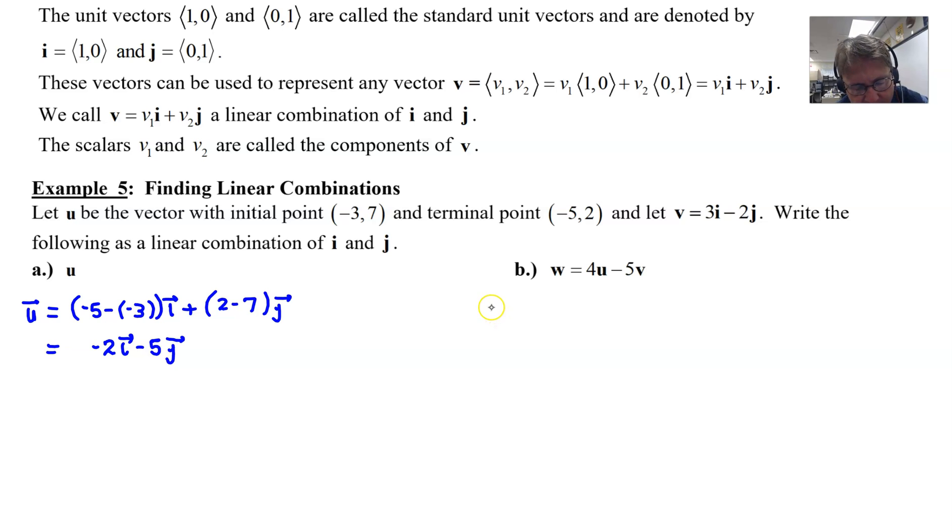All the while, we're supposed to write this in linear combination form. As far as four times vector u is concerned, we already have our vector u here, so we just merely need to take 4 and multiply it by that vector. Notice this is a scalar multiplier.